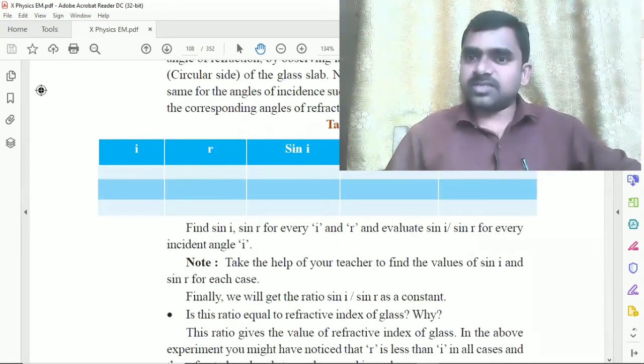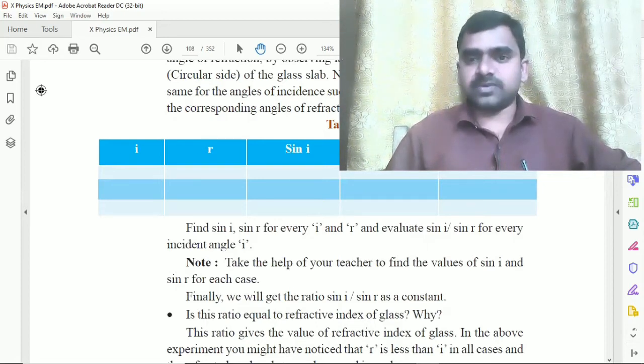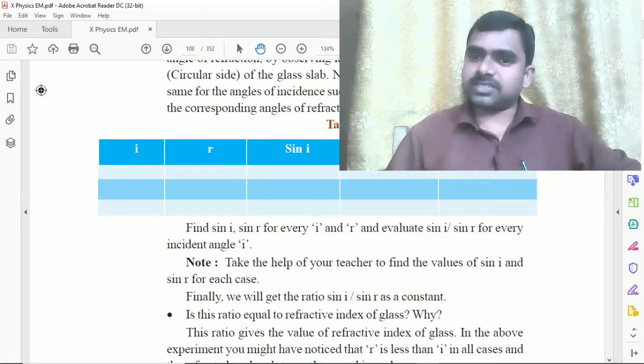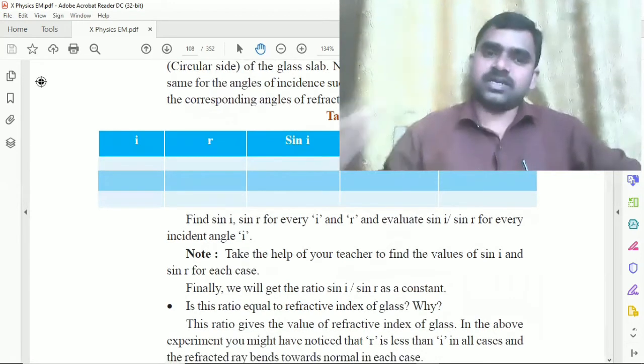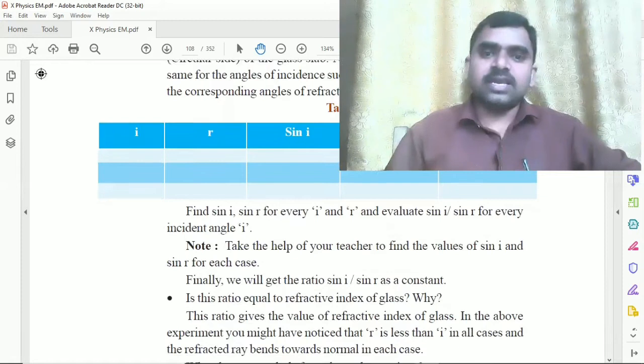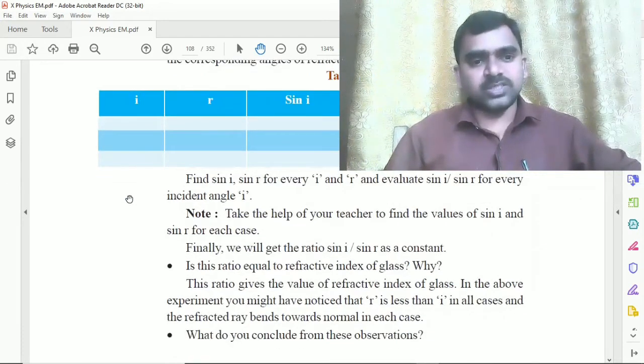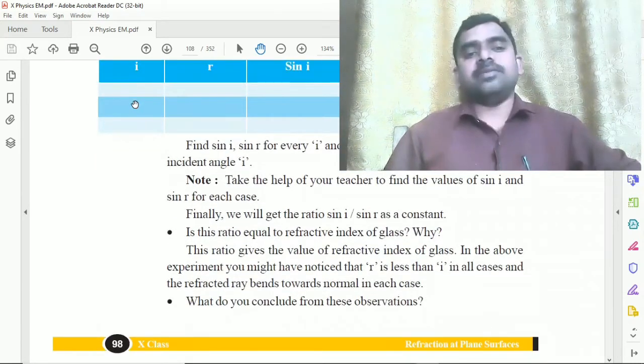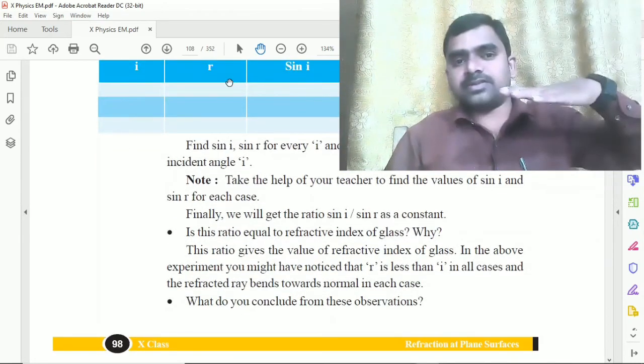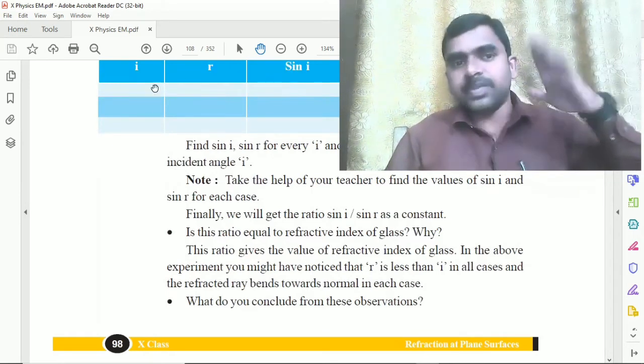Note these values in table two. Do the same for angles of incidence such as 20 degrees, 30, 40, 50, 60. At least we have to take six observations. Here is the table: 15 degrees, 20 degrees, 30 degrees, 40 degrees, 50 degrees. For the first time, measure the angle of refraction r. Sign 15 degrees.